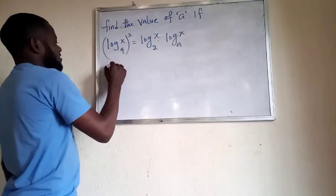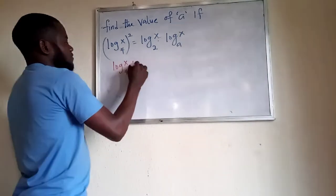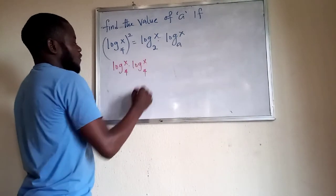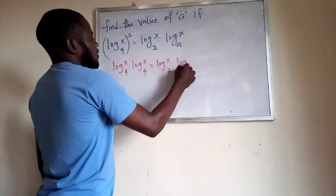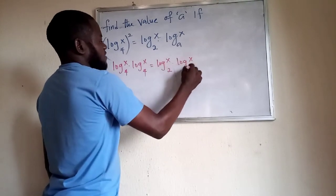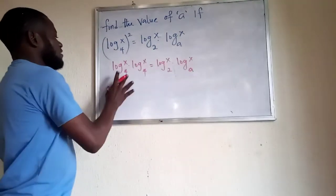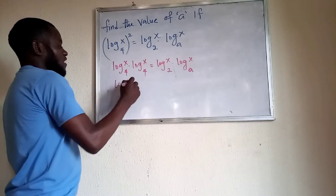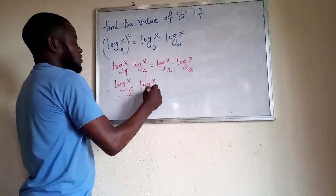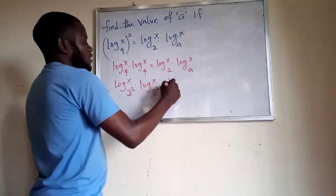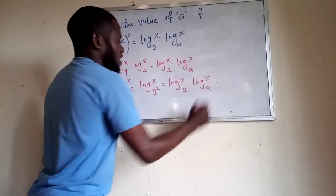We can say this is the same thing as log x in base 4 times log x in base 4, and this will equal log x in base 2 times log x in base a. So log x in base 4 squared becomes log x to the base 4 squared, which is also log x base 2 to the power of 2, times log x in base 2 times log x in base a.